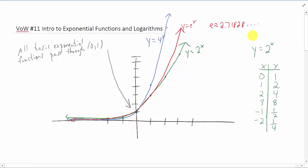That, of course, is because if you plug in x equals 0 into any of these exponential functions, you get something to the 0 power, and that is always 1.